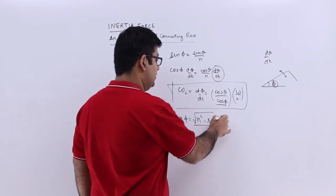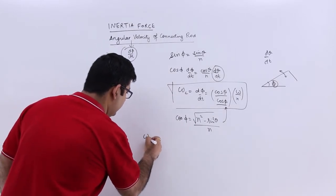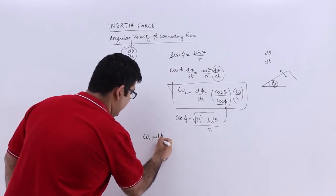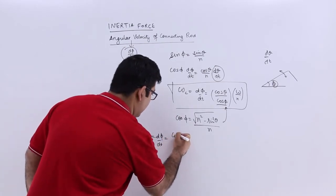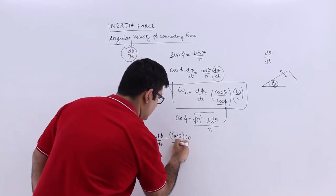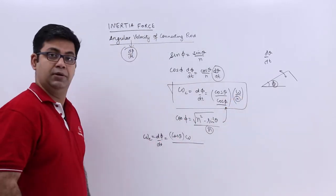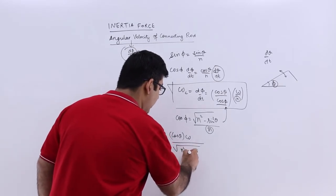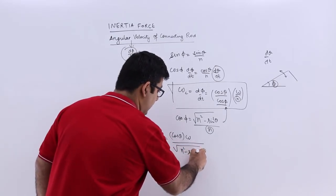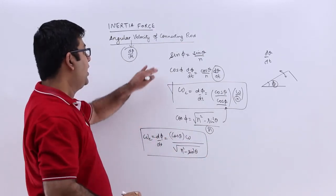I can put this over here which will give me omega c equals cos theta into omega, and this n will cancel. The only value which will be left is n square minus sin square theta. So this is the angular velocity of the connecting rod.